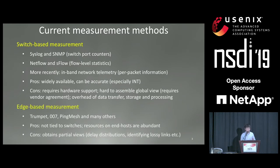The second class of methods are called edge-based measurement. There is lots of research in this class. Some examples include Trumpet, W7, ping mesh, and so on. These methods are generally more flexible since they are not tied to switches. However, most of them only support obtaining partial views into the network — for example, you can get delay distributions in the network for some intervals like 10 seconds to a minute, and you can identify lossy links. Compared to the switch-based methods, they are not as accurate.